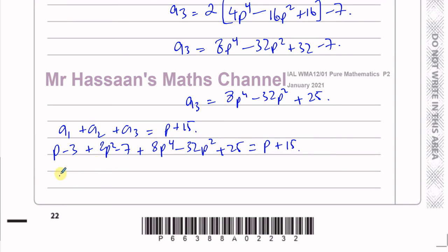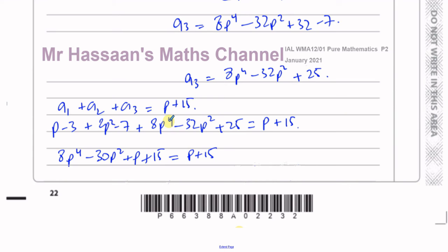Collecting terms: 8p⁴, then p squared terms give minus 30p squared, then p terms give plus p, and the constants: minus 3 minus 7 plus 25 is plus 15. So we have 8p⁴ minus 30p squared plus p plus 15 equals p plus 15. The p and 15 cancel on both sides, leaving 8p⁴ minus 30p squared equals 0.